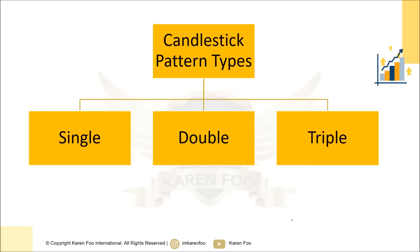When it comes to candlestick patterns, there are three main types: single patterns, double candlestick patterns, and triple patterns. When looking at single patterns, you need an additional candle for confirmation, so the double pattern is an extension of the single pattern. Similarly, you need a third candle to confirm a double pattern, making the triple pattern an extension of the double pattern.